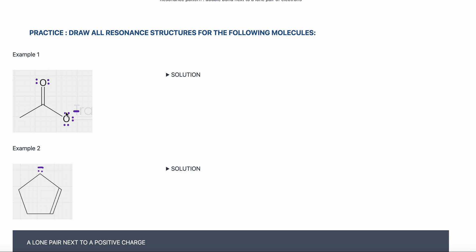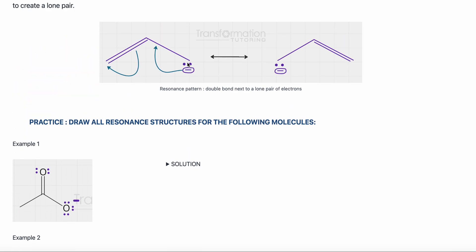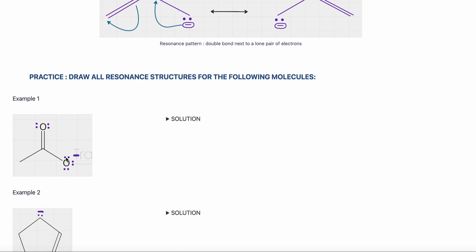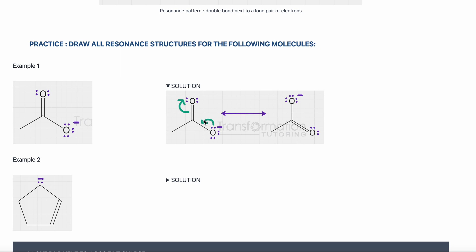Here I see a lone pair — a bunch of lone pairs — next to a double bond. That's my pattern. So I draw one curved arrow from the lone pair to make the double bond, and one arrow from the double bond to make a lone pair. One arrow here, one arrow here. This is my new resonance form.